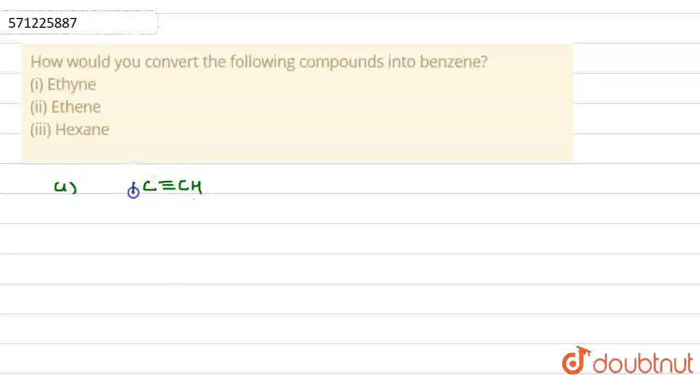When we have to convert an ethyne molecule into benzene, we take 3 moles of ethyne molecule. When we take 3 moles of ethyne molecule in the presence of red hot iron tube, red hot iron tube...